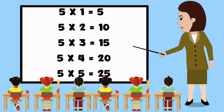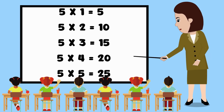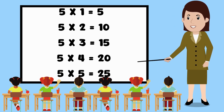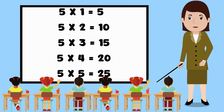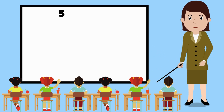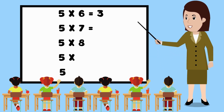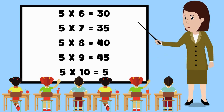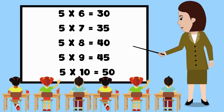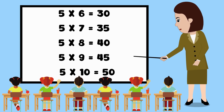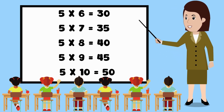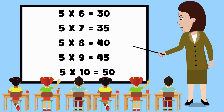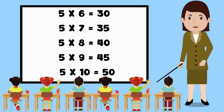5 1s are 5. 5 2s are 10. 5 3s are 15. 5 4s are 20. 5 5s are 25. 5 6s are 30. 5 7s are 35. 5 8s are 40. 5 9s are 45. 5 10s are 50.